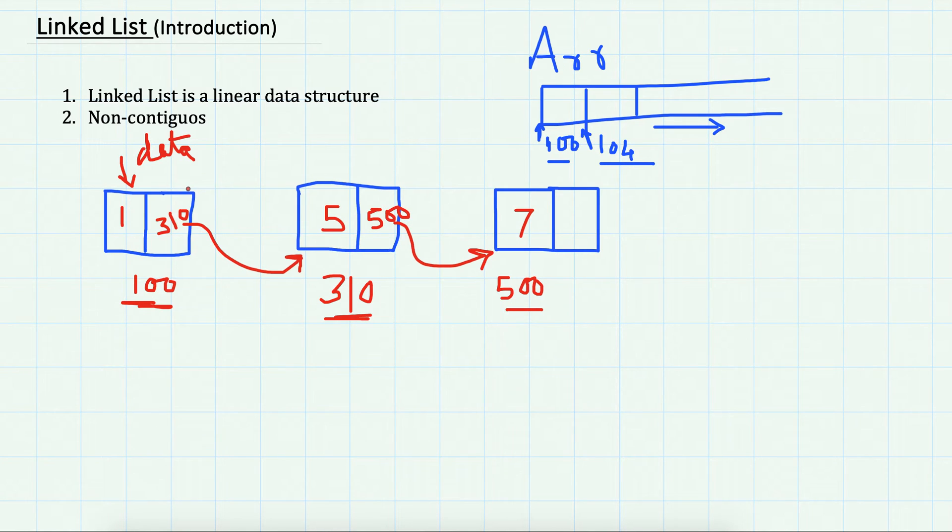This is usually called the next pointer. It will store the next node in the list. For the last node, there is no next node to it, so it points to null. We have the reference to